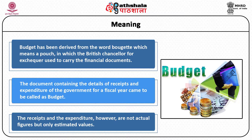To sum up, we can say that budget is a systematic tool of gathering information from the past and present, of formulating plans for the future on the basis of this, and reporting subsequently how these plans have been carried out. However, one thing we must keep in mind is that the receipts and expenditure are not actual figures but only estimated values.